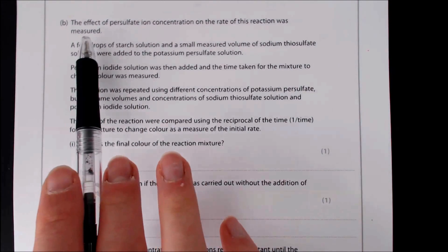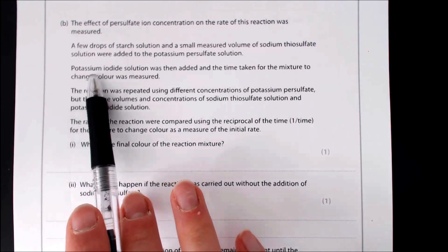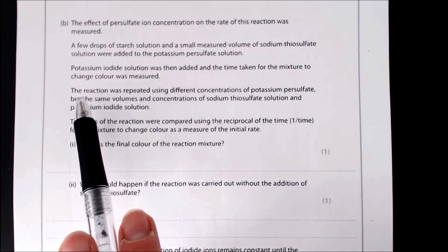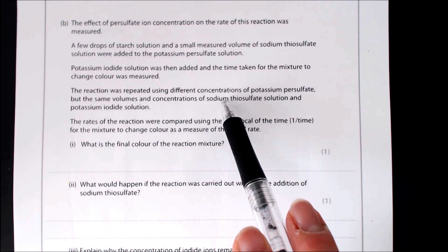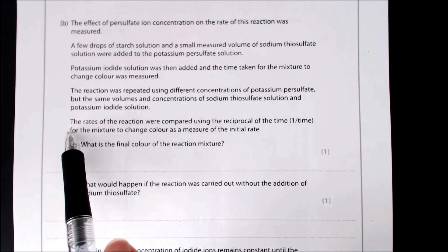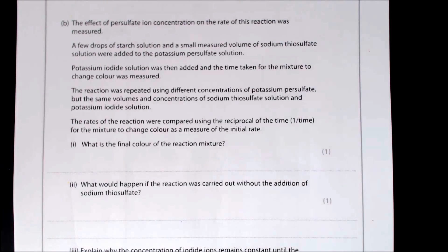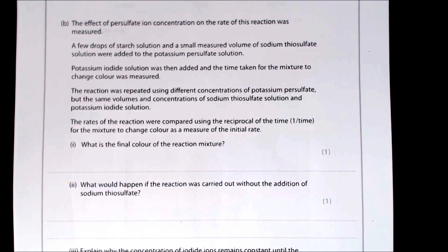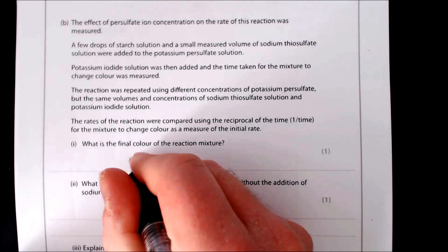Part B: this uses the iodine clock reaction. A small measured volume of sodium thiosulfate and starch solution are added to the persulfate, then potassium iodide is added. The time for the mixture to change colour is measured. The reciprocal of time (1/t) is used as a measure of initial rate. The final colour observed is blue-black (starch–iodine complex).